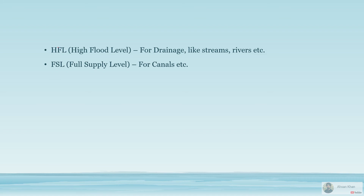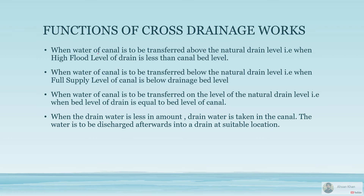Before discussing the different types of cross drainage works, let's look at the terminologies we'll be using. HFL stands for High Flood Level and FSL for Full Supply Level. HFL is used for drainage — like streams, rivers, and other natural water supplies. The high flood level is calculated from data on previous floods over the years to estimate the maximum expected flood height. FSL — Full Supply Level — is used for canals, indicating how much water is expected to pass through the canal.